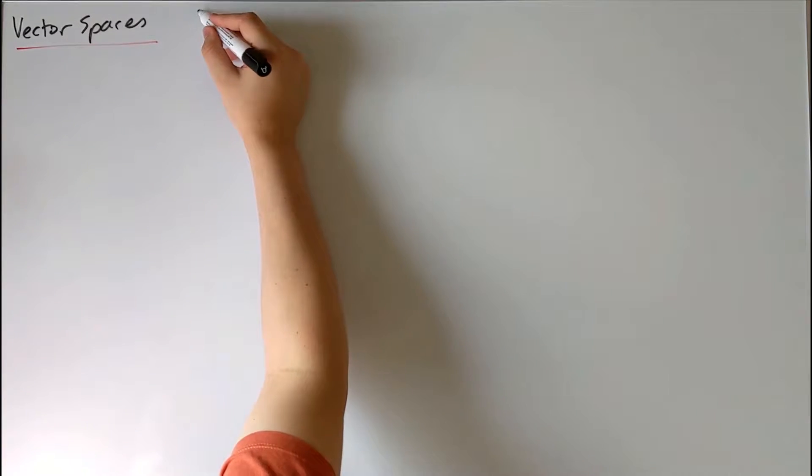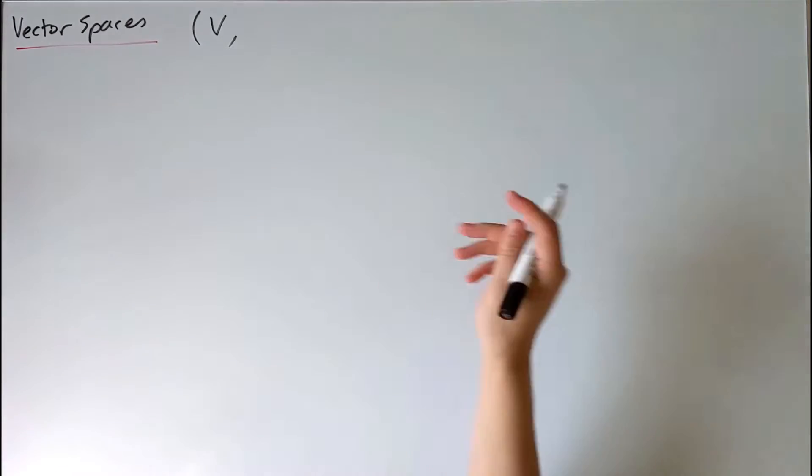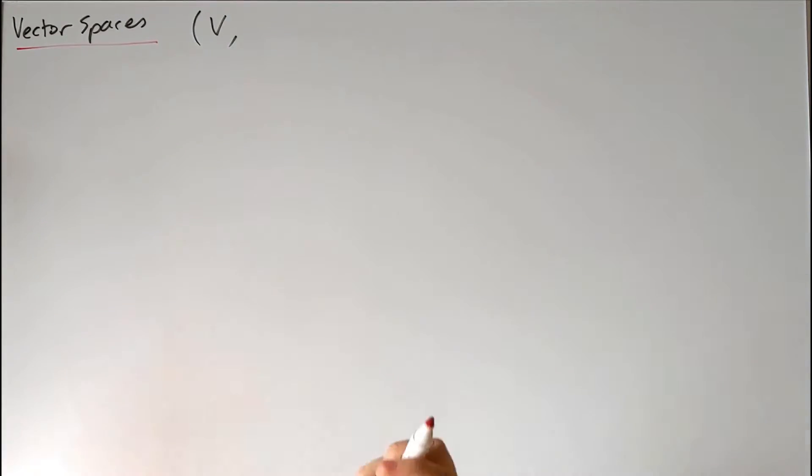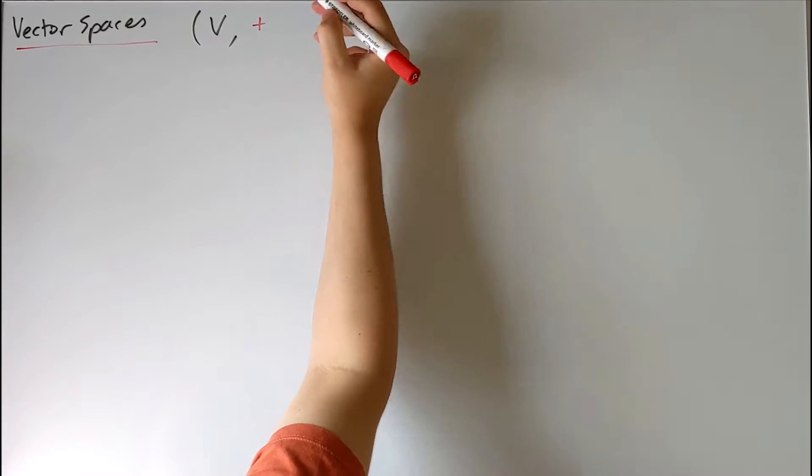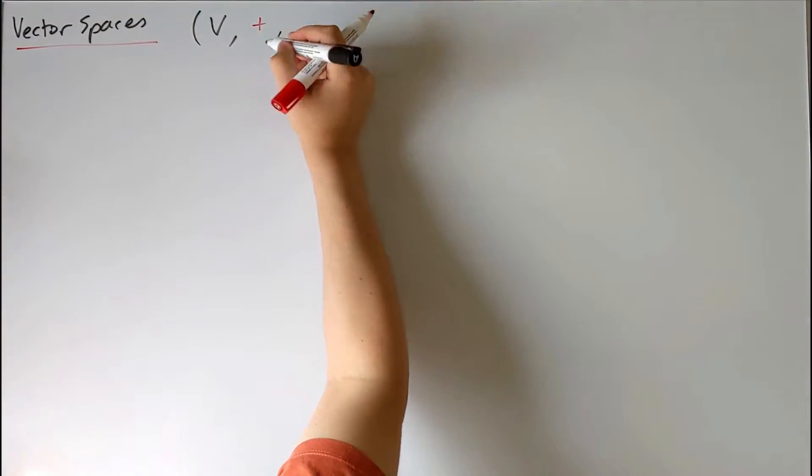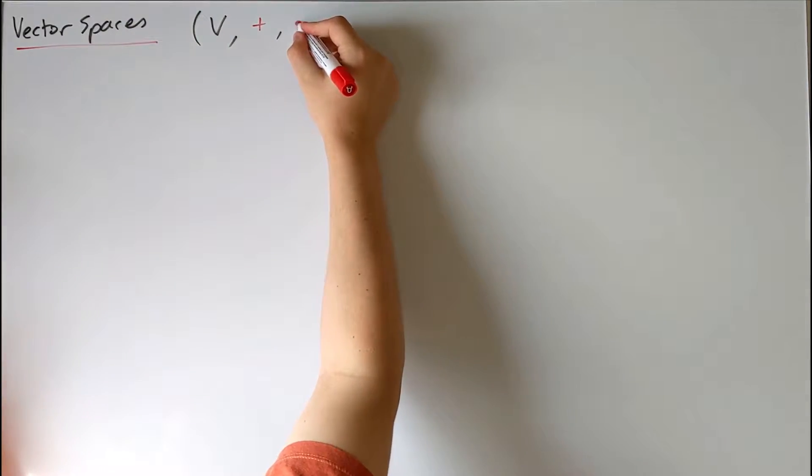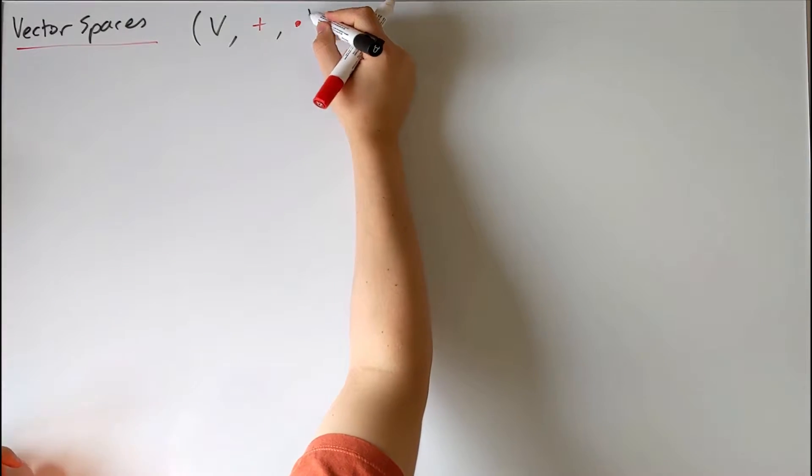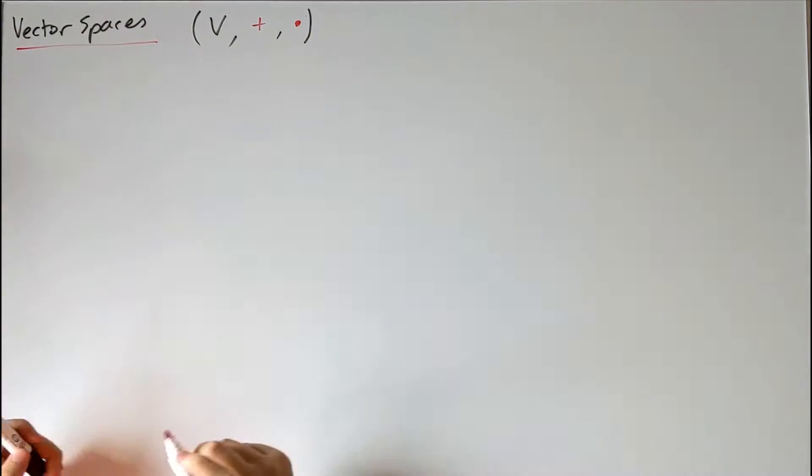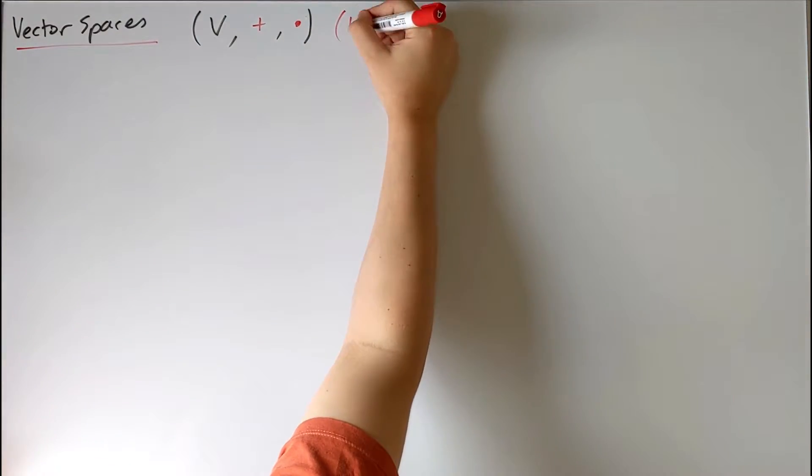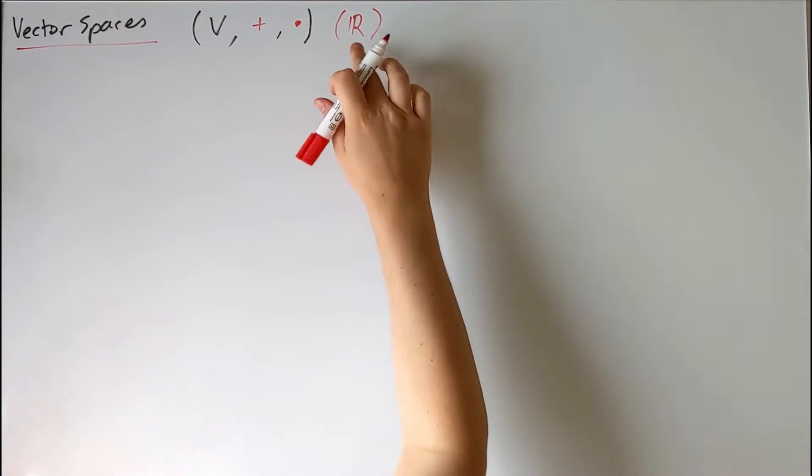Which I'll remind you was just a set of elements that we can define a particular operation called vector addition and scalar multiplication. And remember that in order to define this scalar multiplication, we also needed an underlying field which I'm going to take to be the real numbers.